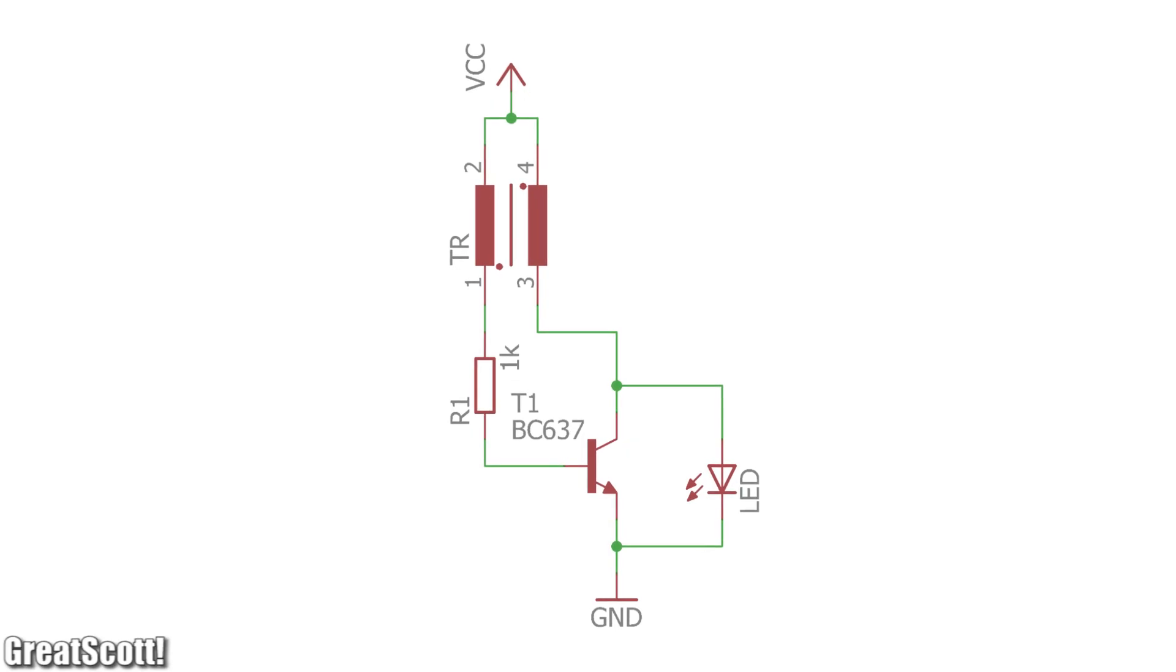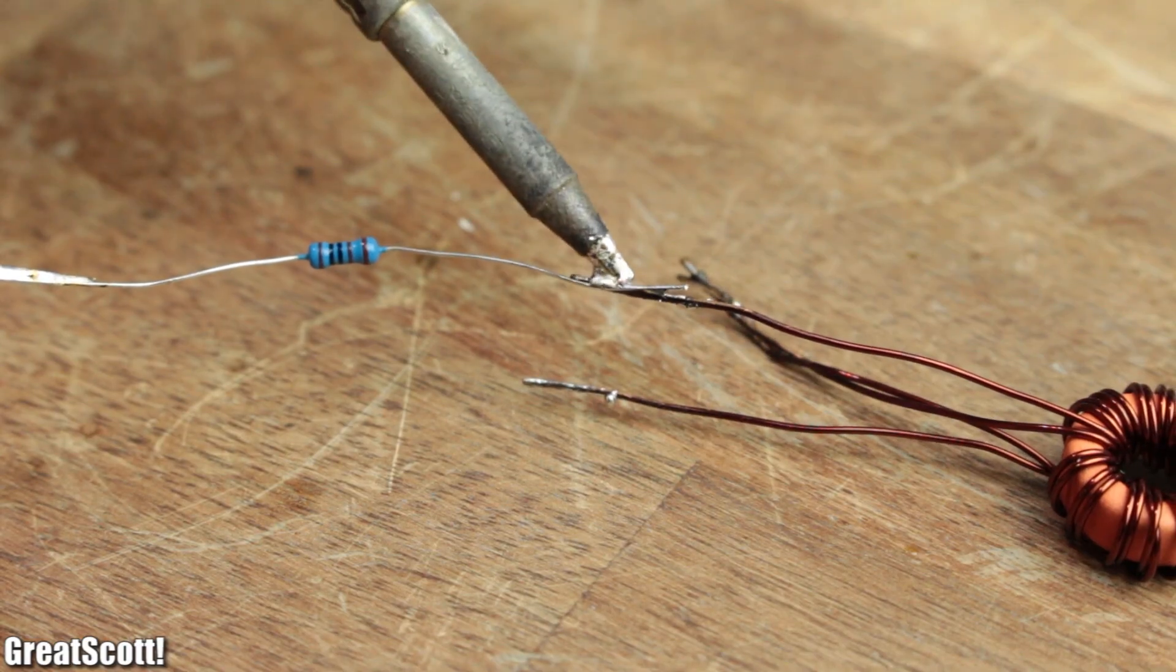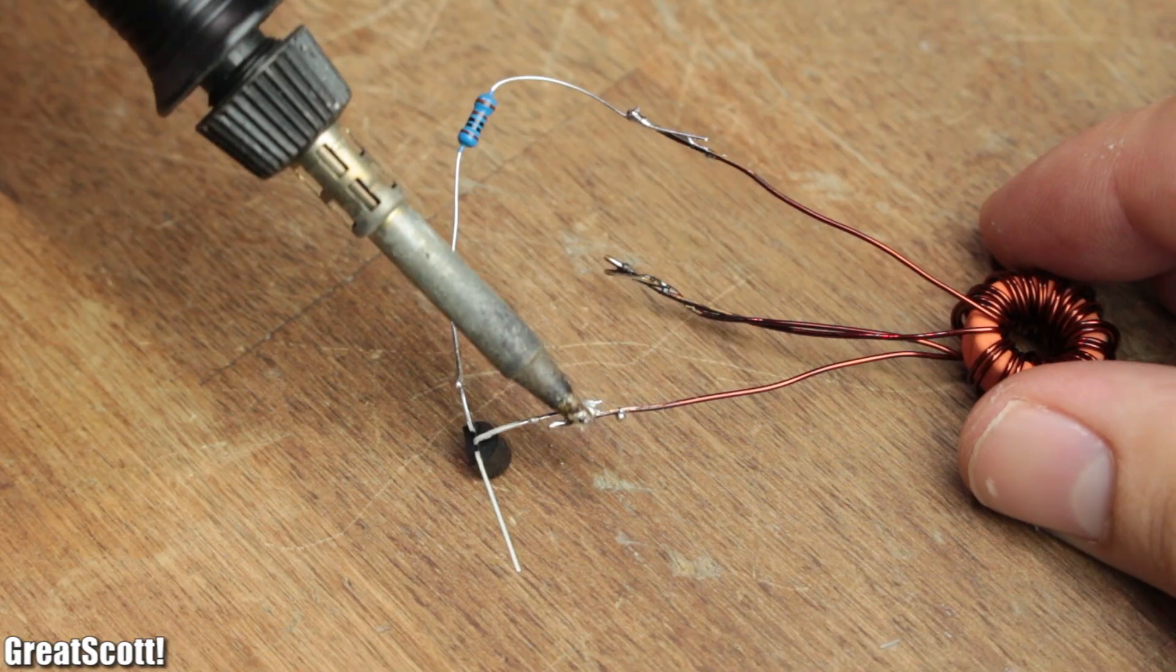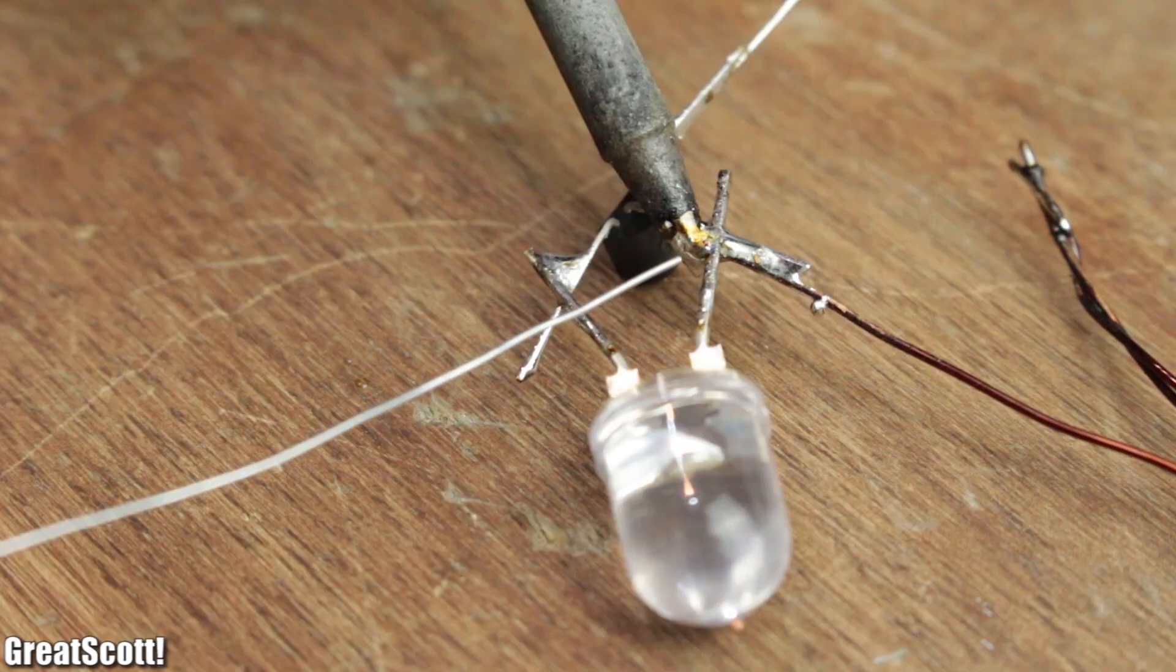According to the rather simple schematic, I then created five solder joints in order to connect the components to one another. And if you want to give the circuit a try as well, you can find a parts list and the schematic in the video description.